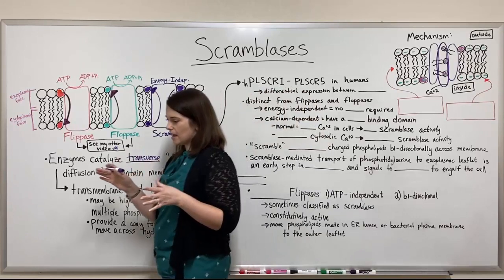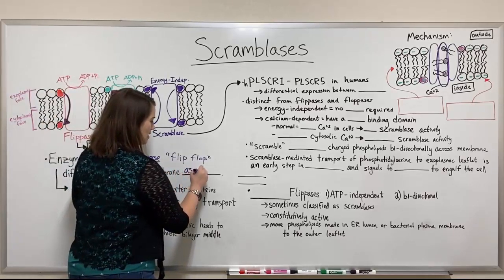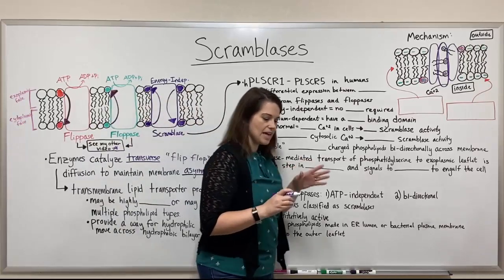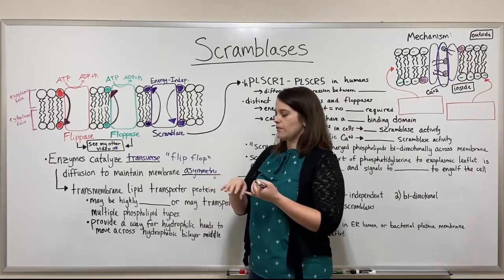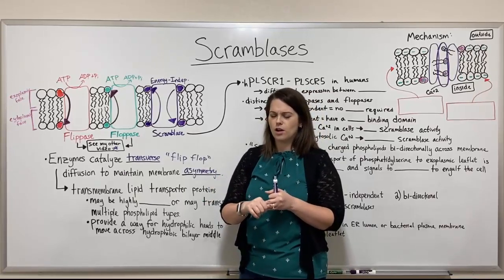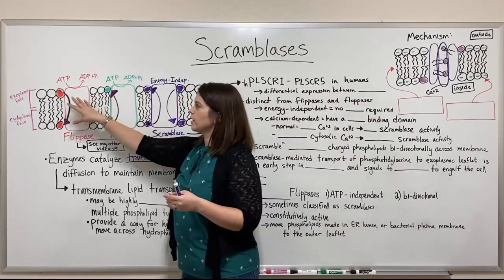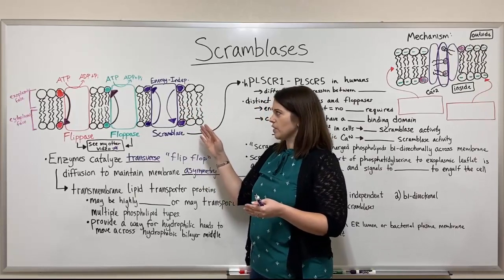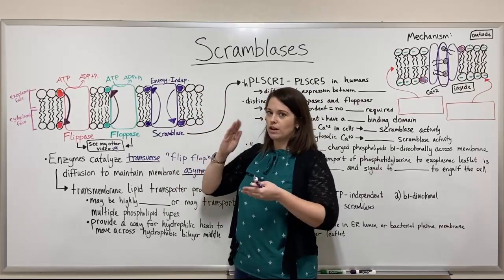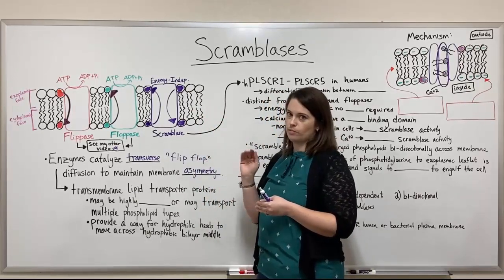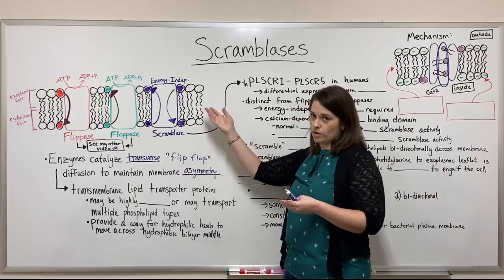These enzymes, particularly the flip-ases and flop-ases, catalyze this diffusion to maintain membrane asymmetry. With these biological membranes, all of the phospholipids are not the same — there are many different kinds, including phosphatidylserine, phosphatidylcholine, phosphatidylethanolamine, sphingomyelin, and cholesterol. Some phospholipids are much more frequent in the exoplasmic face and others in the cytoplasmic face, and having the right phospholipids on the right sides is really important for membrane function.